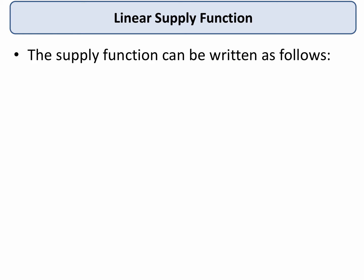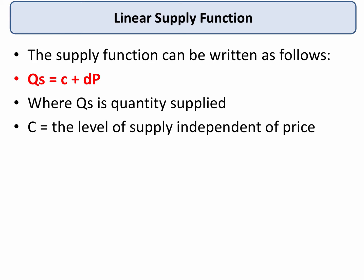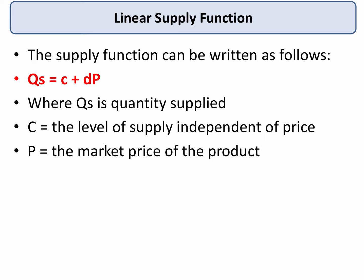We can write a supply function as an equation. In this case Qs, quantity supplied, equals C plus DP. Qs is the quantity supplied of the product. C is the level of supply that is independent of the market price, and P is the market price of the product. Normally we expect a positive relationship between market price and supply because producers are responding to the profit motive. D is the coefficient of price — it tells us how much a supplier will respond when the price of the product changes.